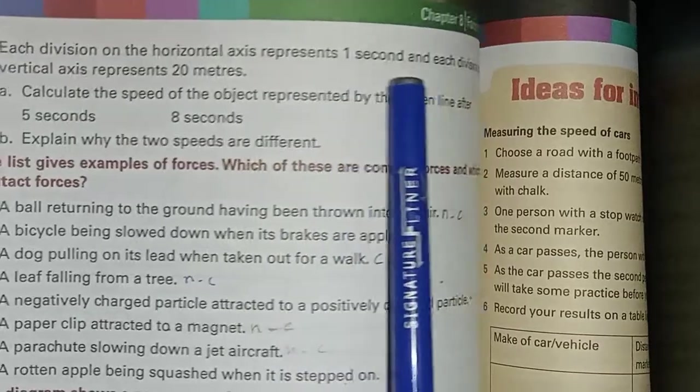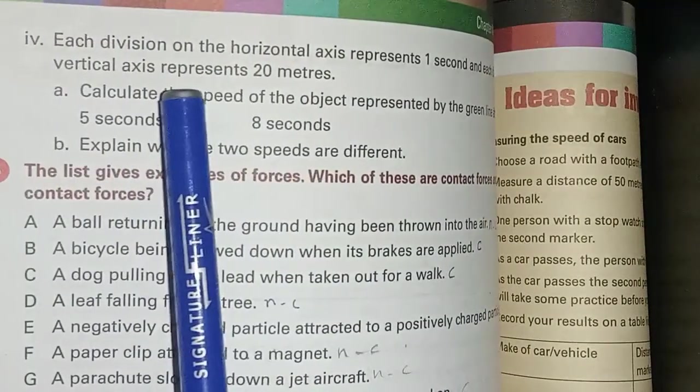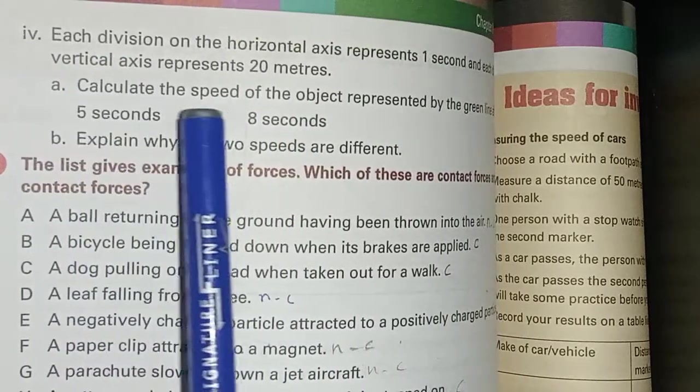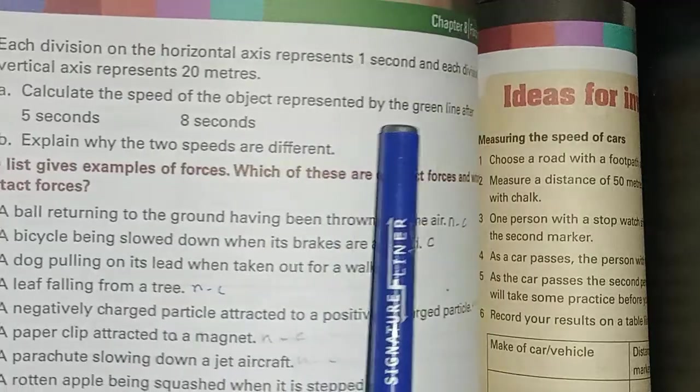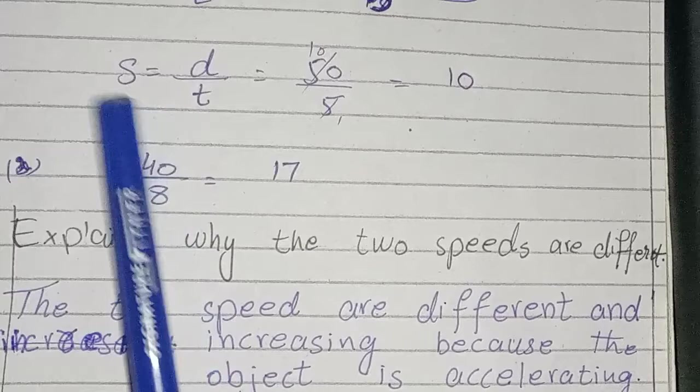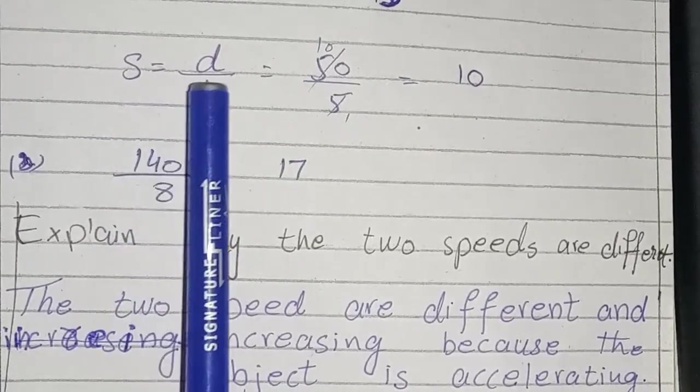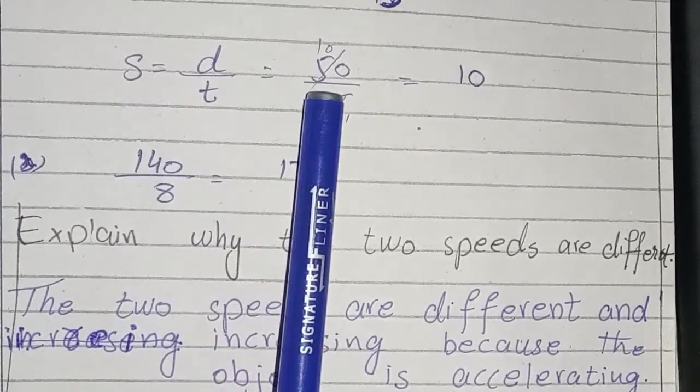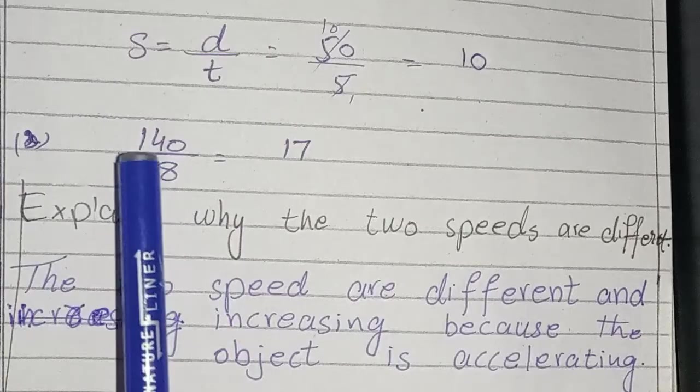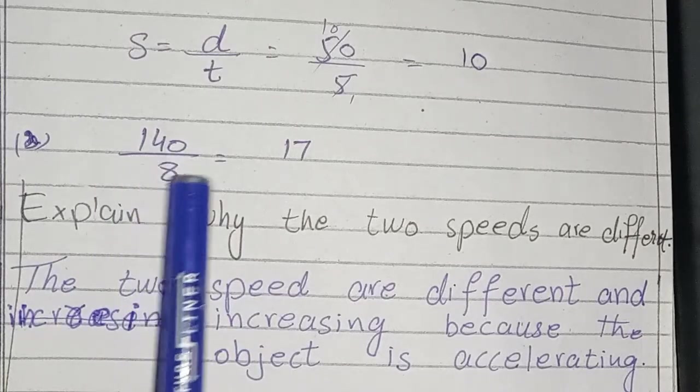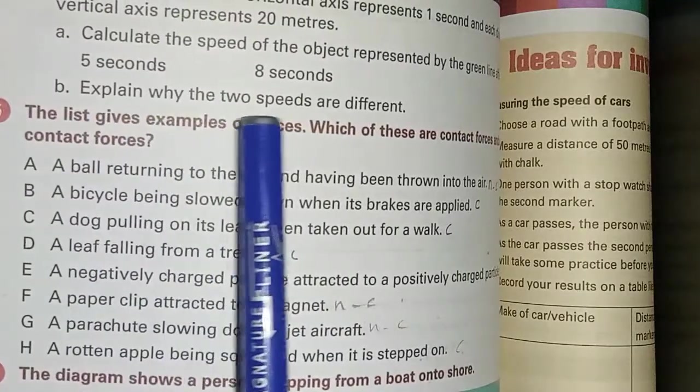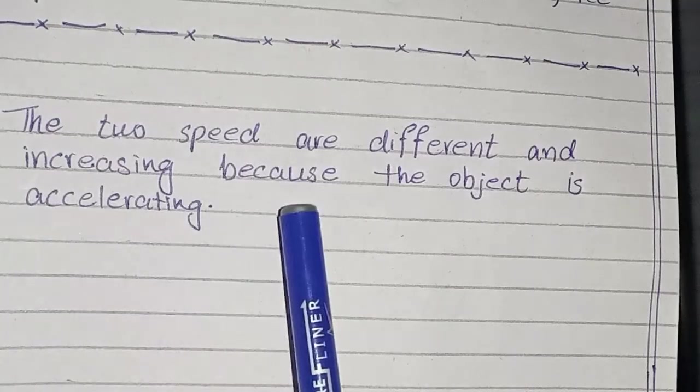Next page. Each division on the horizontal axis represents 1 second and each division on the vertical axis represents 20 meters. A: calculate the speed of the object represented by the green line after 5 seconds. You should write this formula: speed equals distance over time. Distance is 50, time is 5, after calculating you get answer 10. And B's answer: write 140 over 8, after calculating you get answer 17. Explain why the two speeds are different.